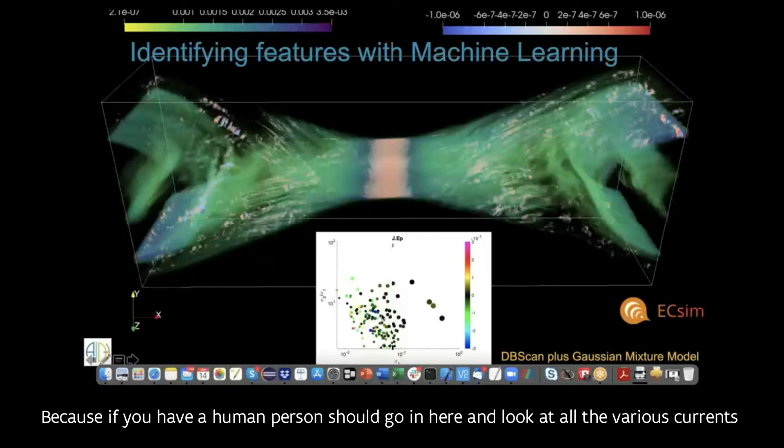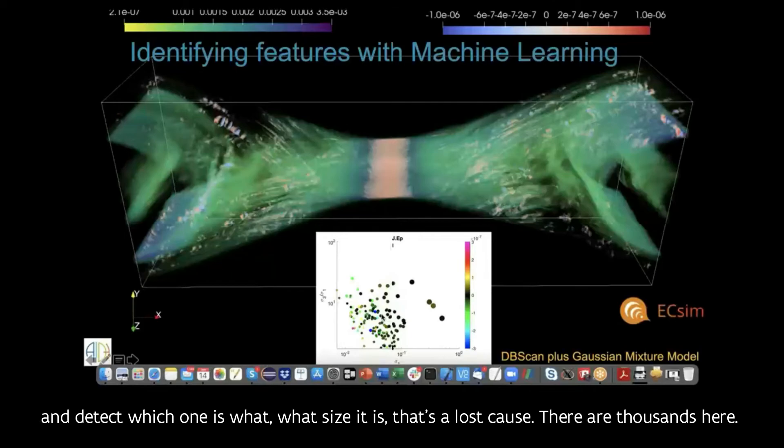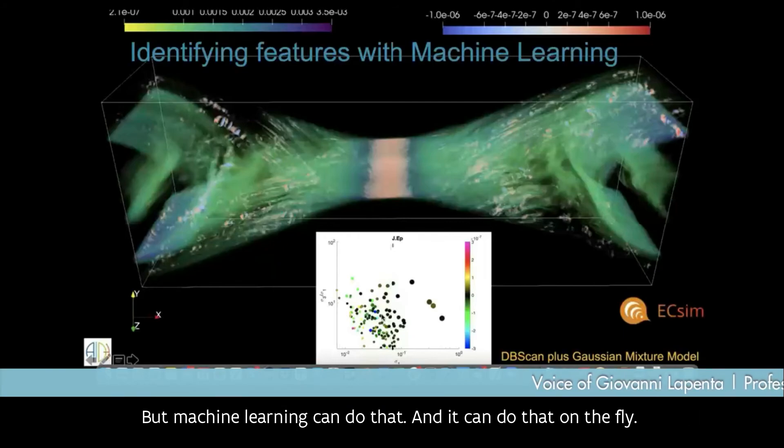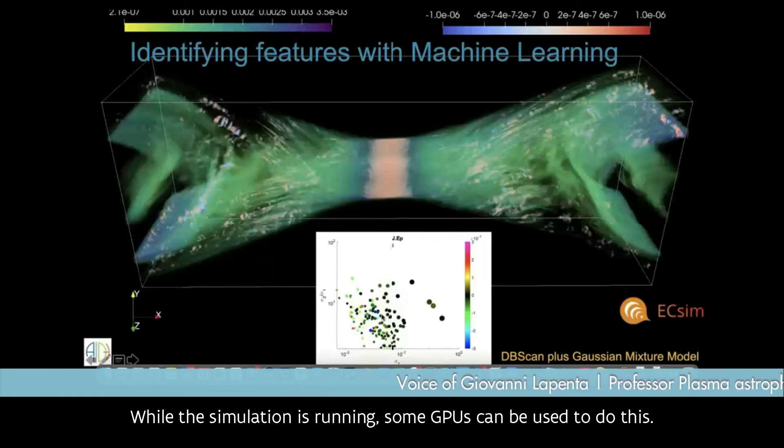So this is a discovery, the result of this simulation using machine learning to analyze the data because if you have a human person go in here and look at all the various currents and detect which one is what size it has, that's a lost cause. There are thousands here, but machine learning can do that on the fly while the simulation is running. Some GPUs can be used to do this.